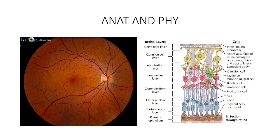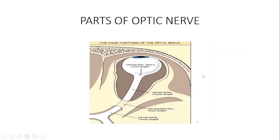Remember that the retina contains ganglion cells, and the ganglion cells come together to form the optic nerve. The most superficial part of the optic nerve is called the optic disc. So all the ganglion cells on the retina come together to form the optic nerve, and the most superficial part of the nerve as we do fundoscopy and see is called the optic disc.